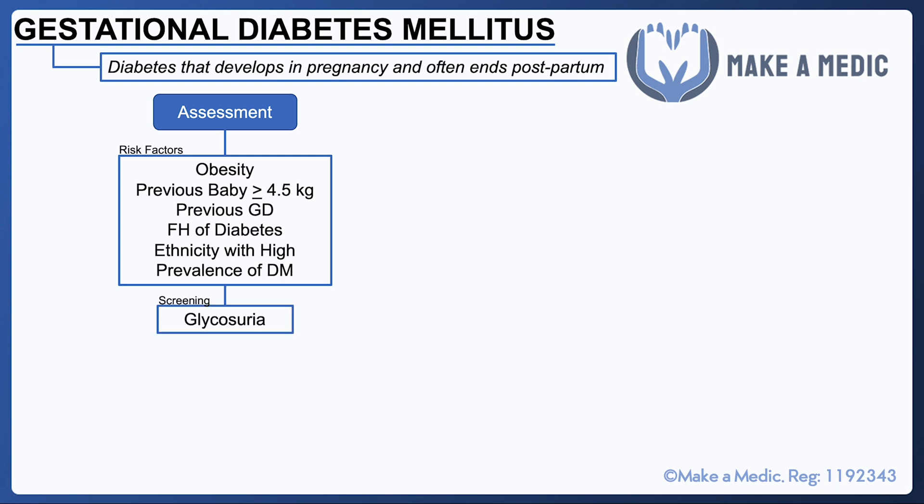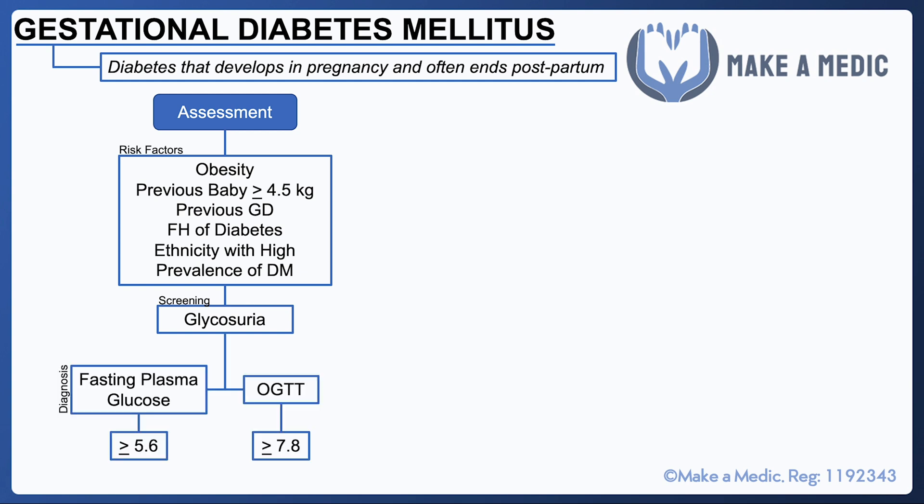At the early antenatal checkups, patients will be asked for a urine sample to do a urine dipstick, and glycosuria may be the first way that GDM is identified early on in the pregnancy. This is just a screening test. To actually confirm a diagnosis of GDM, you need either a fasting plasma glucose or an oral glucose tolerance test, and the thresholds used for diagnosing GDM are different from the ones used for diabetes.